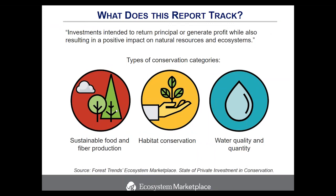This is the second report tracking private investment in conservation. We defined conservation investments as having met two criteria: the investment had to intend to generate profit while also intending to have a conservation impact — the conservation must have motivated the investment from the outset, not simply be a byproduct of investment made solely for financial return. We divided conservation investments into three broad categories: sustainable food and fiber (including sustainable forestry, agriculture, and fisheries), habitat conservation (including direct land ownership, forest carbon mitigation, and banking), and water quality and quantity (including water rights trading, stormwater management, and watershed protection).